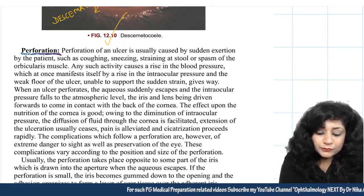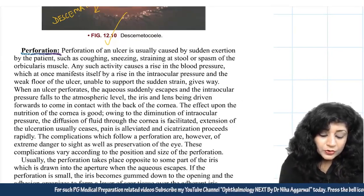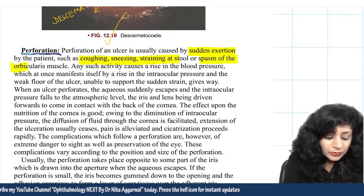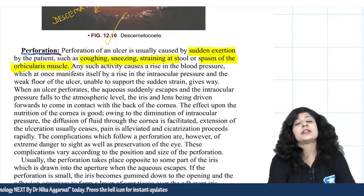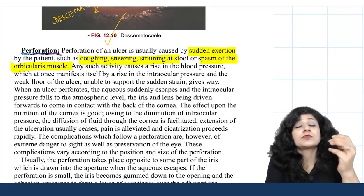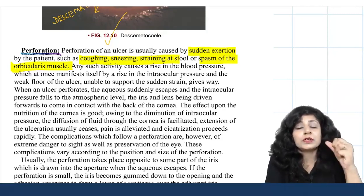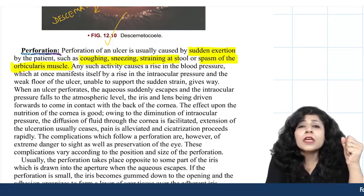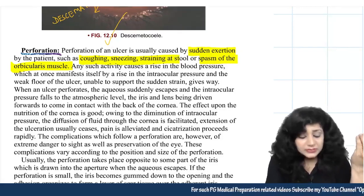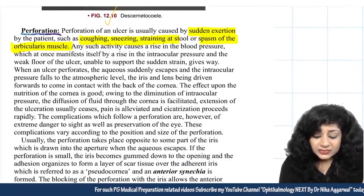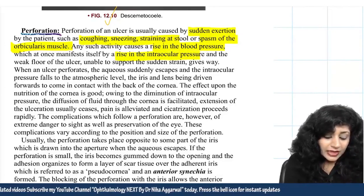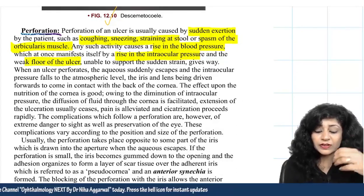Perforation of an ulcer is usually caused by sudden exertion — coughing, sneezing, straining, or spasm of the orbicularis muscle. After any intraocular surgery (cataract or glaucoma) or when impending perforation is present, patients should be advised to avoid heavy lifting, straining, sneezing, and coughing. Laxatives and cough suppressants should be prescribed. Any activity causing a rise in blood pressure can also raise intraocular pressure.